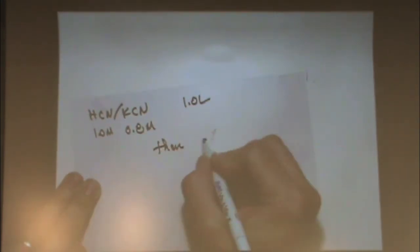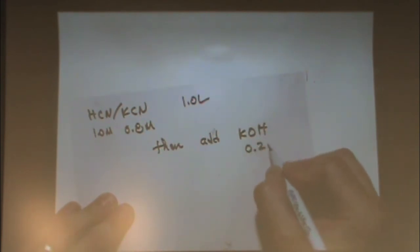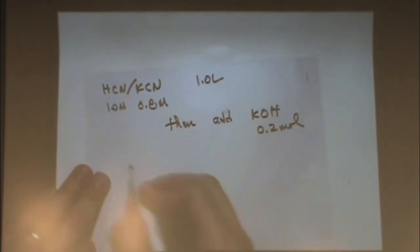Stoichiometry table. So common ion is just a kind of buffer problem, really. If I had that buffer pair, HCN and KCN and this was one molar and this was 0.8 molar and let's say I had one liter of it and then I add something. You want me to add an acid or base right now? A base. So it'll be a strong base. Let's say I add KOH. And I'll pick some number like 0.2 moles of it or something like that. Then you've got to set up a buffer.